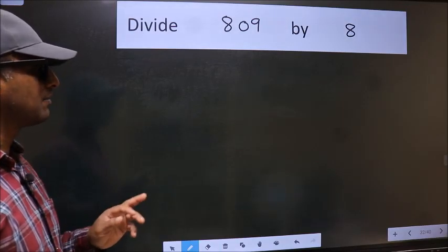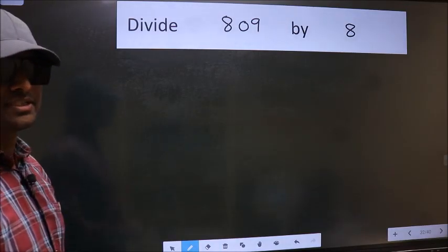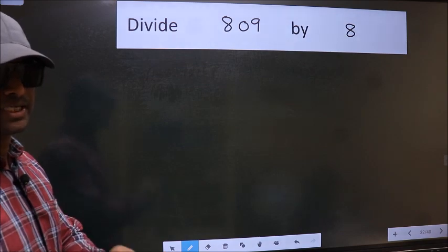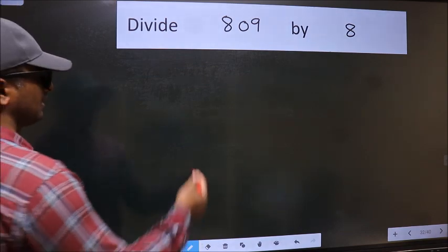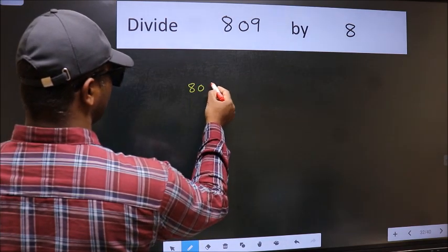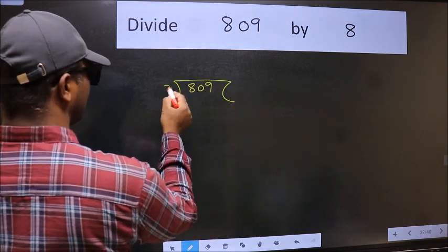Divide 809 by 8. To do this division, we should frame it in this way.